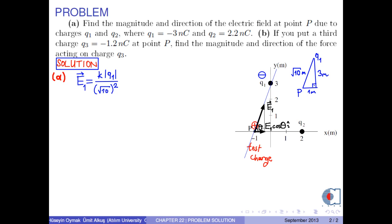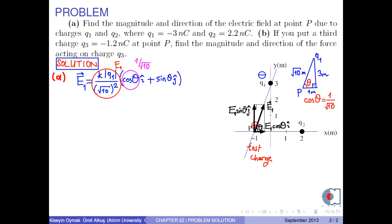The direction is E1 times cosine theta i-hat plus E1 times sine theta j-hat. From the right triangle in the figure, cosine theta is 1 over square root of 10, and sine theta is 3 over square root of 10.